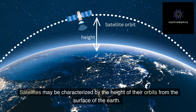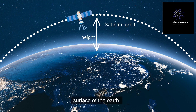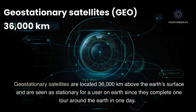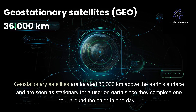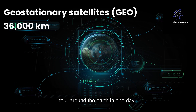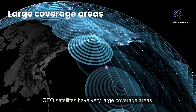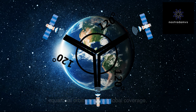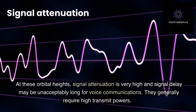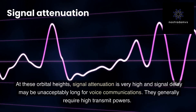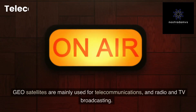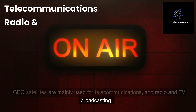Satellites may be characterized by the height of their orbits from the surface of the Earth. Geostationary satellites are located 36,000 kilometers above the Earth's surface and are seen as stationary for a user on Earth, since they complete one orbit around the Earth in one day. Geosatellites have very large coverage areas — three geosatellites spaced 120 degrees apart on the equatorial orbit can achieve global coverage. At these orbital heights, signal attenuation is very high and signal delay may be unacceptably long for voice communications, generally requiring high transmit powers. Geosatellites are mainly used for telecommunications and radio and TV broadcasting.